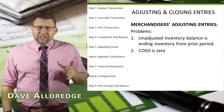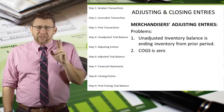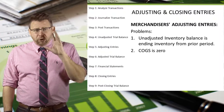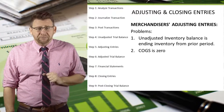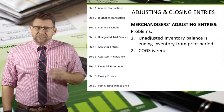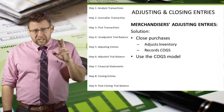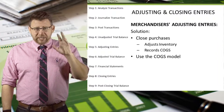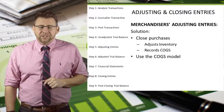The adjusting entries for merchandisers are basically the same as those for service firms, with the exception of adjusting the inventory account. This is a problem for periodic merchandisers because the unadjusted trial balance for inventory is the prior month's ending balance. Additionally, cost of goods sold is zero. The solution is using something we call the cost of goods sold model, which adjusts the inventory account and closes purchases to cost of goods sold.